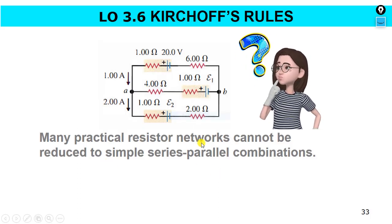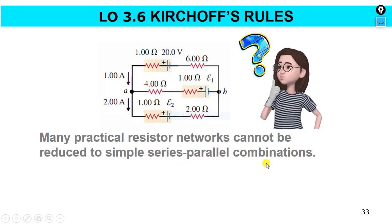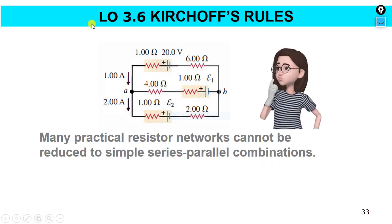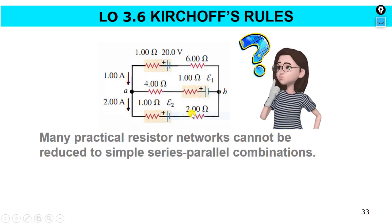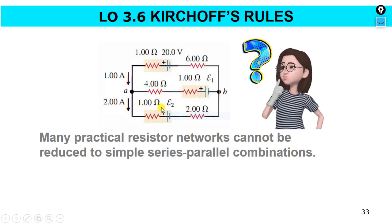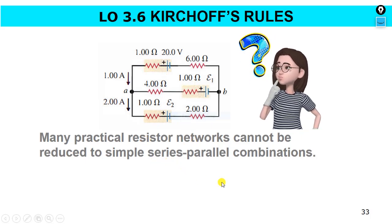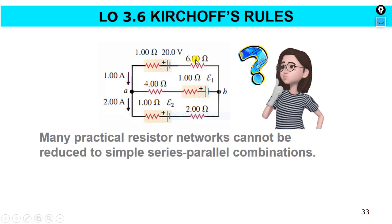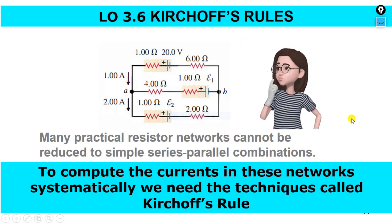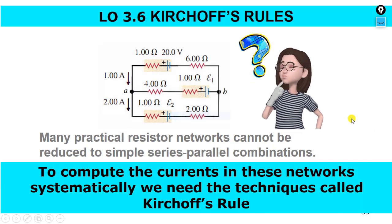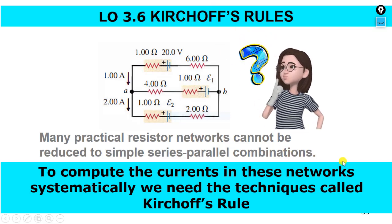We found out that many practical resistance networks cannot be reduced to simple series and parallel combinations like what we did in previous tutorial lessons. For example, when we have more than one battery and many resistors with different paths. For this kind of complex resistor network, in order to compute the current through each resistor systematically, we need the technique called Kirchhoff's rules.